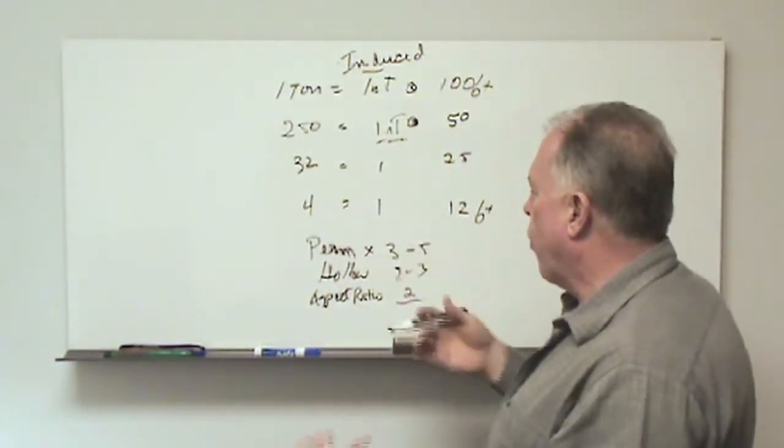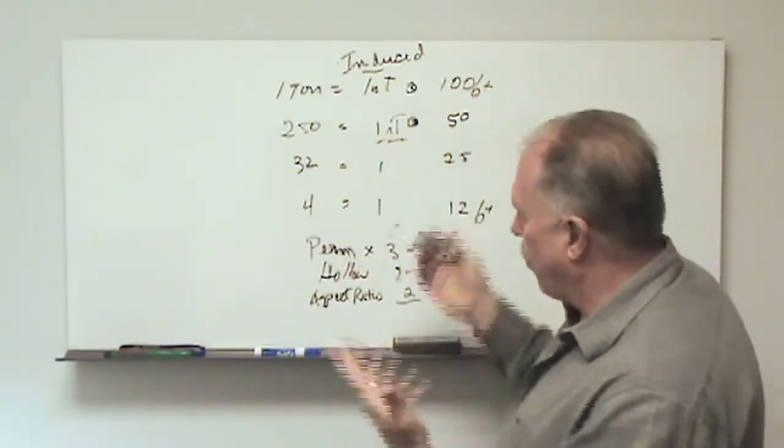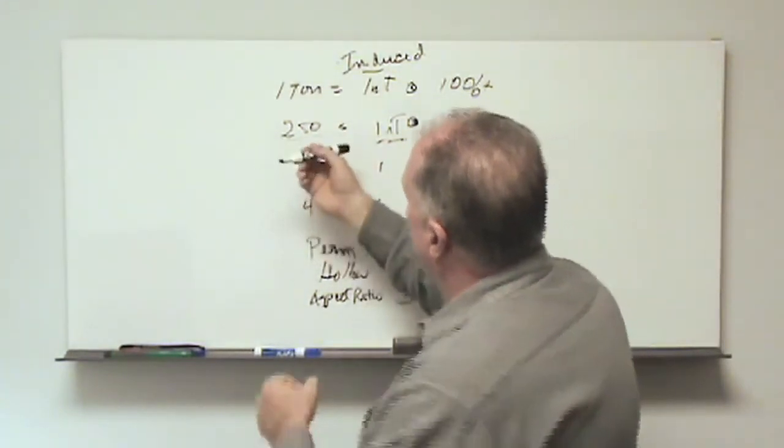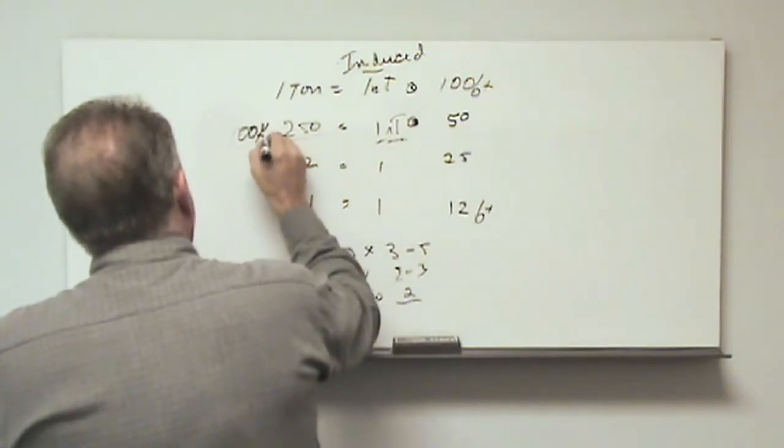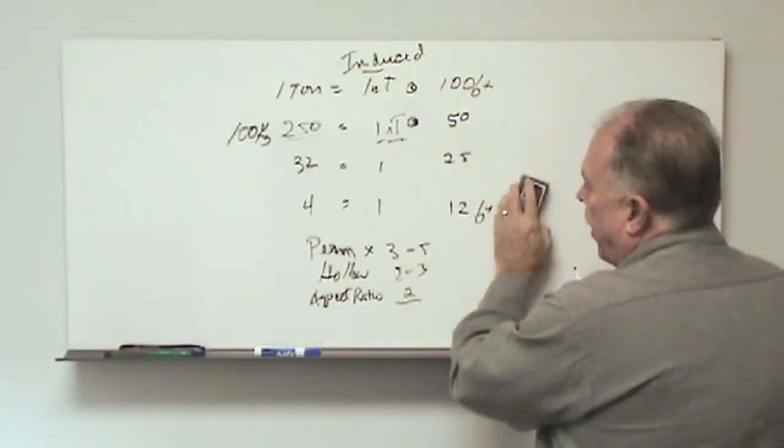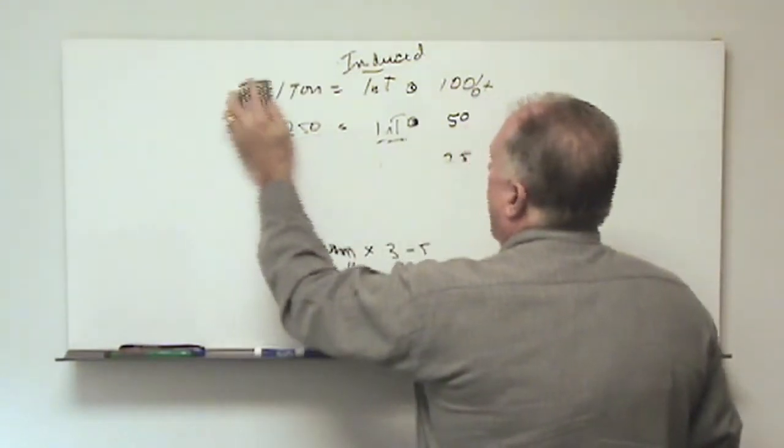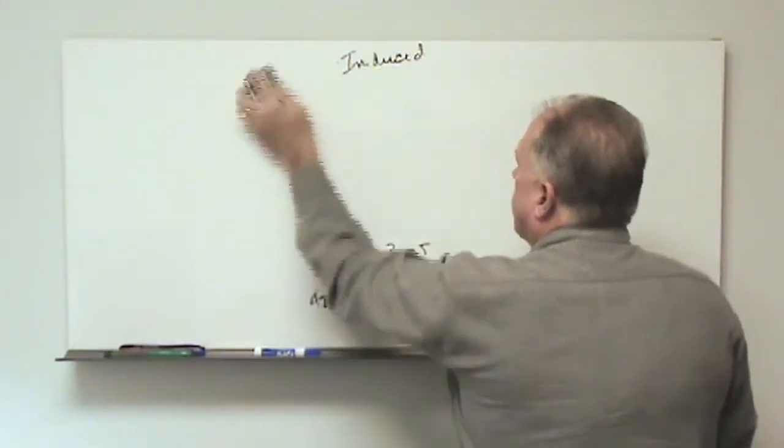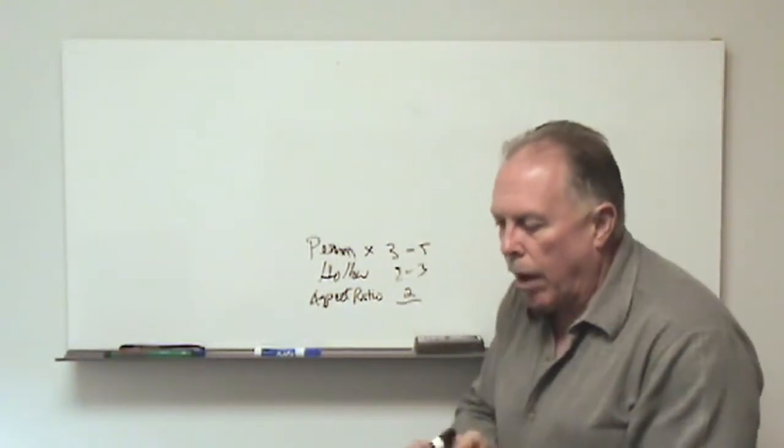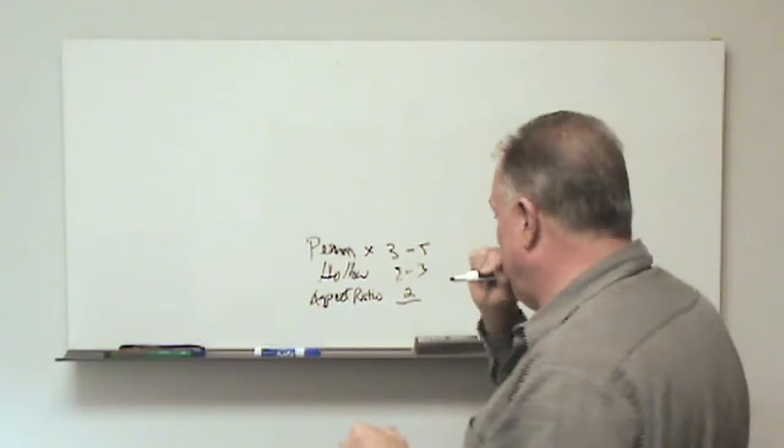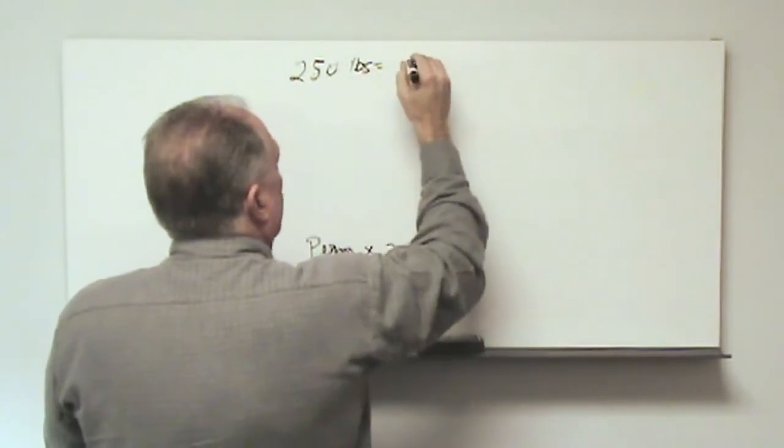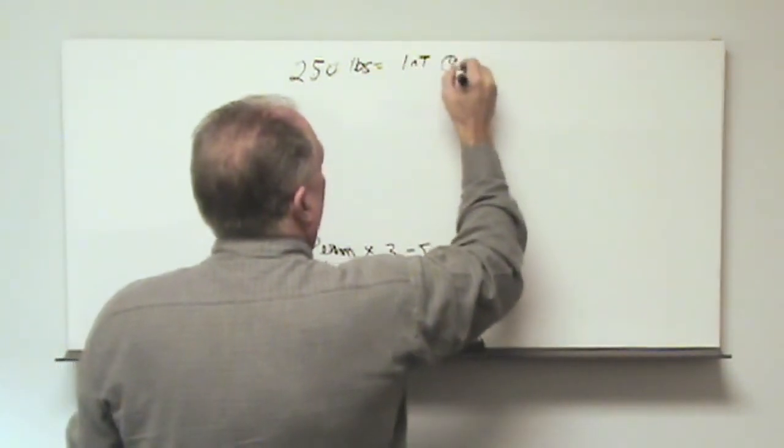So how this informs our survey is that let's say, for instance, and we'll just take an example here that we want to be looking for 250 pounds or approximately 100 kg of ferrous material. And so now we'll sort of design a survey around that. And then we'll use these perm and hollow and aspect ratio numbers to give us an idea of what kind of anomalies we might expect from that 250 pounds. So we'll put this back up, 250 pounds equals one nanotesla at 50 feet.